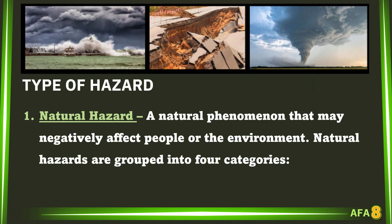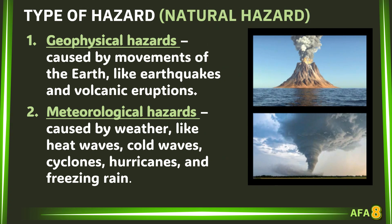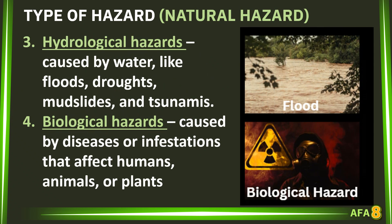The following are the types of hazards. 1. Natural hazard: a natural phenomenon that may negatively affect people or the environment. Natural hazards are grouped into four categories: first, geophysical hazards, caused by movements of the earth like earthquakes and volcanic eruptions; second, meteorological hazards, caused by weather like heat waves, cold waves, cyclones, hurricanes, and freezing rain; third, hydrological hazards, caused by water like floods, droughts, mudslides, and tsunamis; fourth, biological hazards, caused by diseases or infestations that affect humans, animals, or plants.